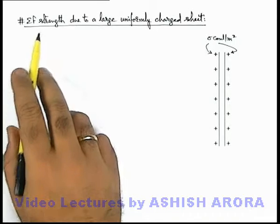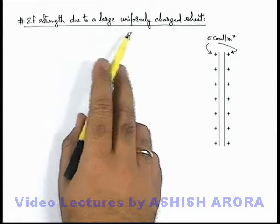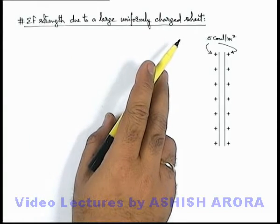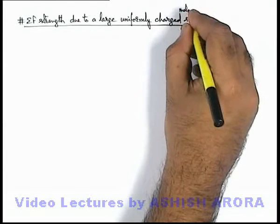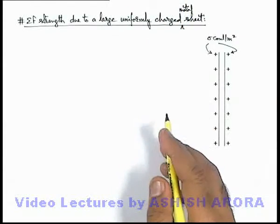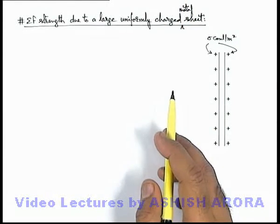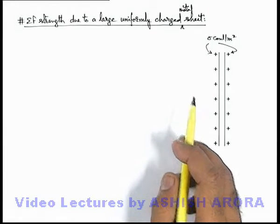Let us discuss the electric field strength due to a large uniformly charged metal sheet. Here we are talking about a metal sheet because in the previous section we have studied the electric field due to a non-conducting sheet.